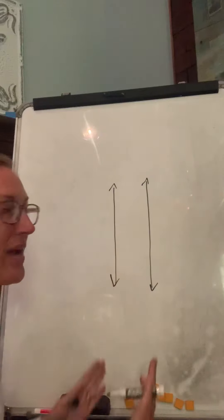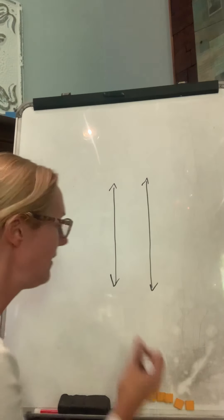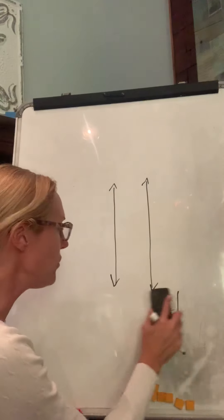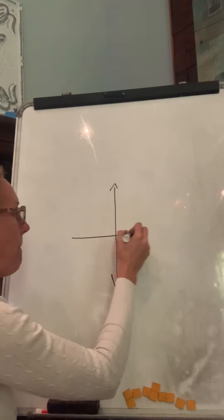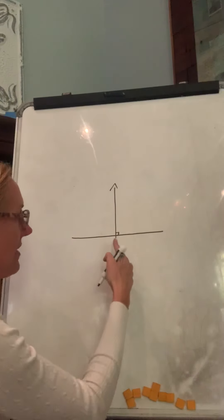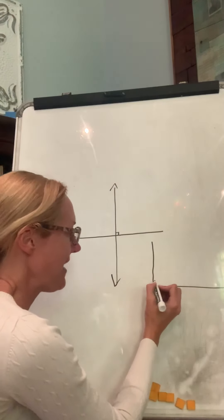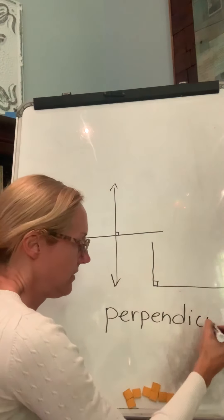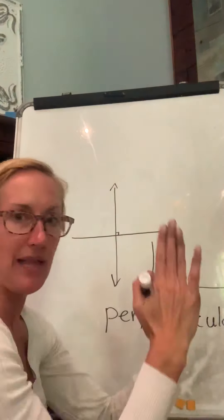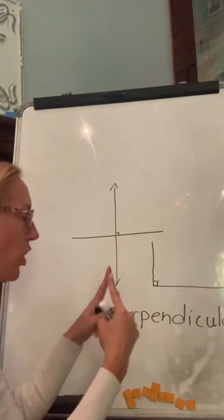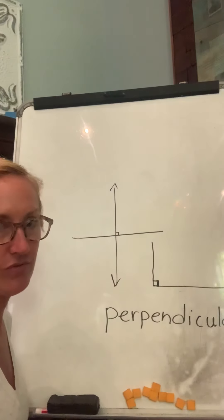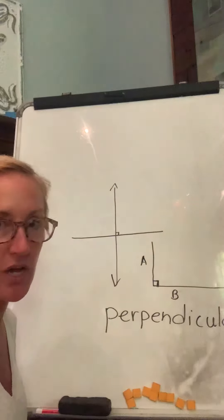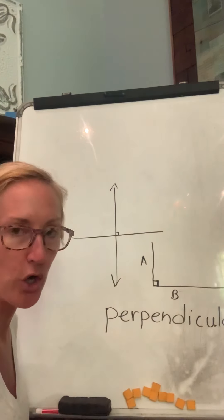If lines keep going and going and are never ever going to cross, those lines are parallel. If they do cross so that they are making right angles, those lines are called perpendicular. So parallel lines never ever cross; perpendicular lines cross and make right angles. Line A and Line B are perpendicular to each other because they make a nice right angle in that corner.